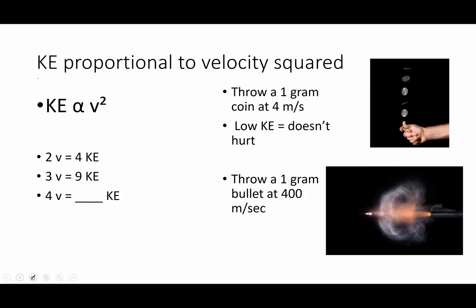There's also a relationship between kinetic energy and velocity, but it's not a direct proportion. It's actually to the squared term. So what that means is if you double velocity, you end up with 4 times the kinetic energy. If you triple velocity, 9 times the kinetic energy. 4 times the velocity, 16 times the kinetic energy.